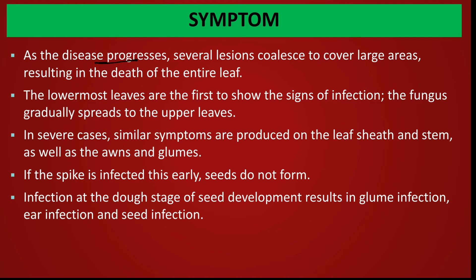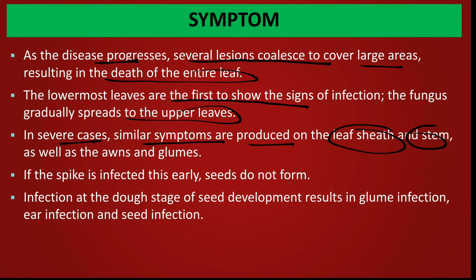As the lesions progress, several lesions coalesce and cover a larger area, resulting in the death of the entire leaf. The lower-most leaves are first to show signs of infection, and the fungus gradually spreads to upper leaves. In severe cases, similar symptoms are produced on leaf sheaths, stems, awns, and glumes. If spikes are infected early, there will be no formation of seed.